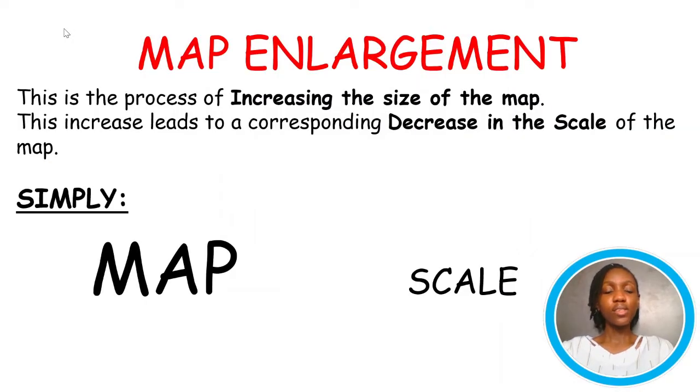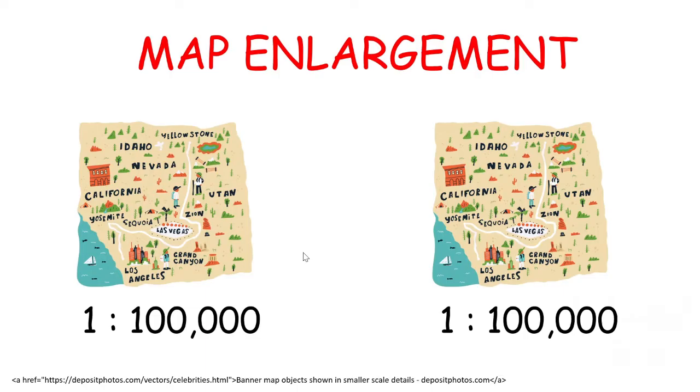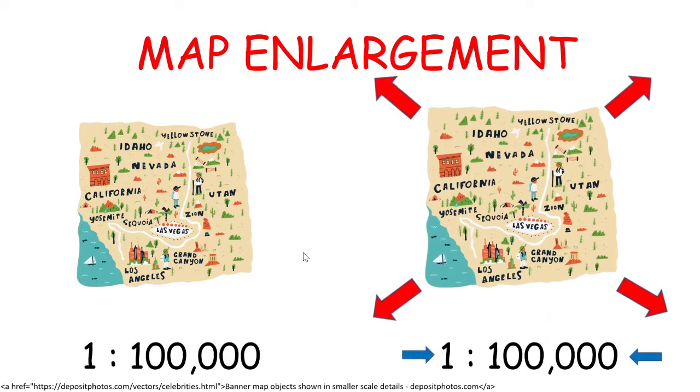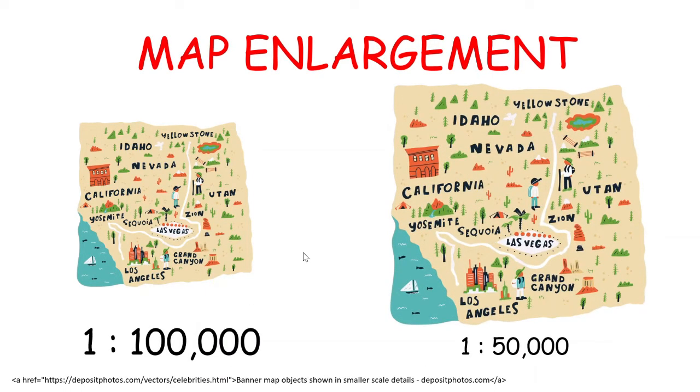So firstly, let's define the concepts: map enlargement. This is the process of increasing the size of the map. This increase leads to a corresponding decrease in the scale of the map. Simply, increasing the size of the map leads to a decrease in its scale. Now let's look at this illustration. Increasing the map size leads to a decrease in its scale.